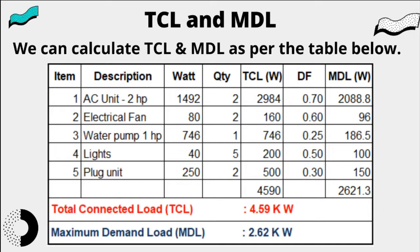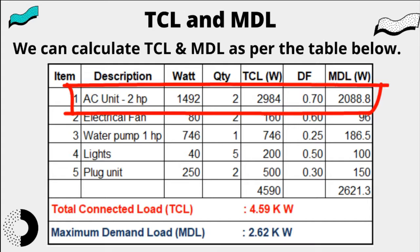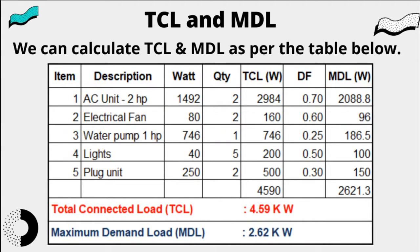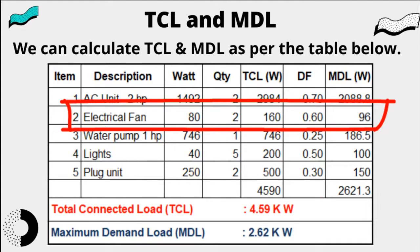Let us analyze the table. The total load of the two AC units is 2984 watts and the MDL is 2088 watts as the DF is 0.70. The TCL of the two fans is 160 watts and the MDL is 96 watts when the DF is 0.60.